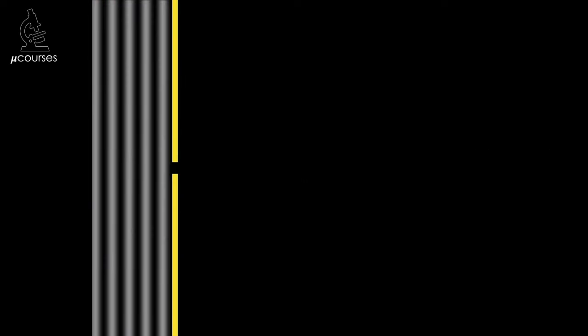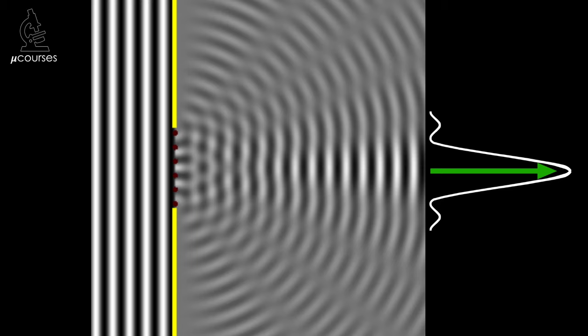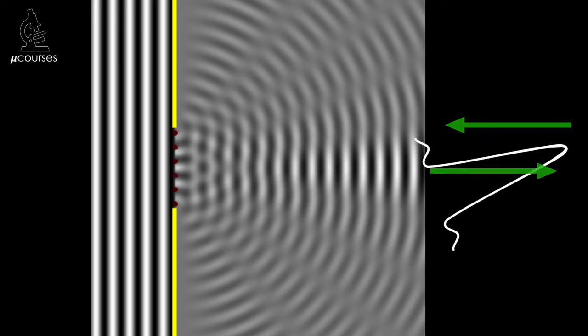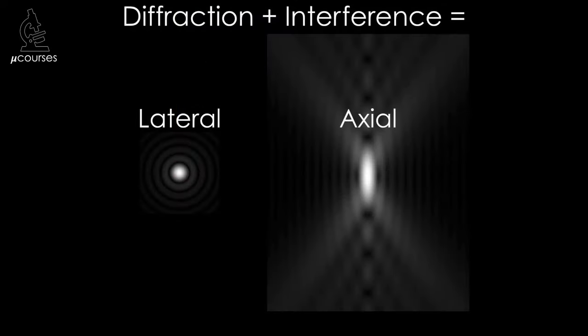Now we finally get back to the microscope. In the microscope we don't have two slits, but there is an aperture in the back of the objective lens, and diffraction occurs there. The aperture in the back of the objective lens is larger than the wavelength of light, so multiple spherical wavelets pass through. If we look at the amplitude of this interference pattern, we'll see that there is a bright central maxima surrounded by dark and light concentric rings — which is our point spread function. So in summary, when we image a point source of light with a microscope, the light we collect from the point source diffracts as it passes through the back aperture of the objective lens, resulting in a three-dimensional interference pattern that we call the point spread function.